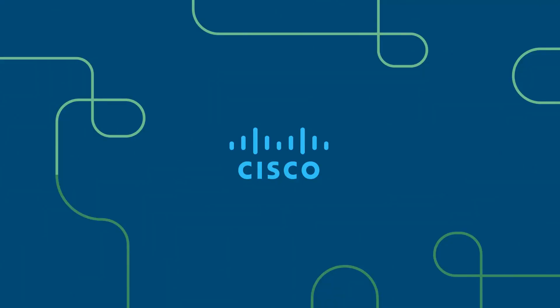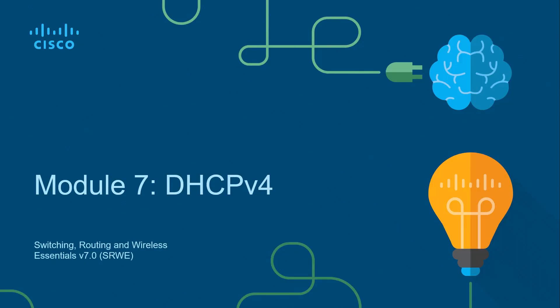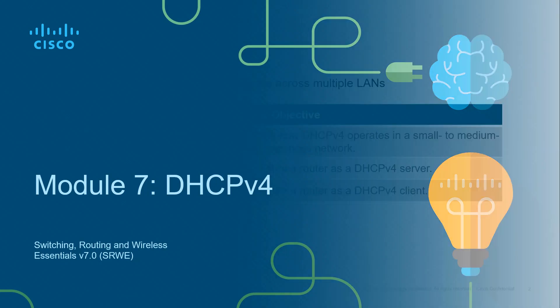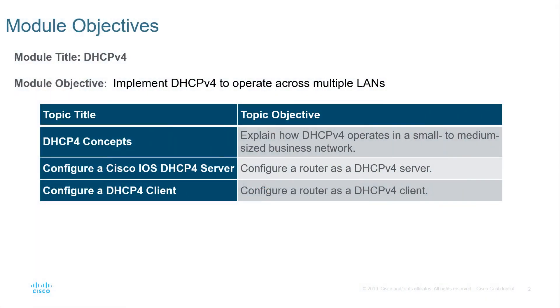Welcome to my Switching Routing and Wireless Essentials course. This is the CCNA version 7 curriculum, the second of three courses. Module 7 covers DHCP version 4. We're going to talk about concepts, how to configure it, and how to configure clients. Let's jump right in.